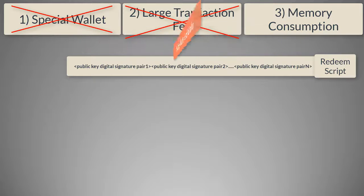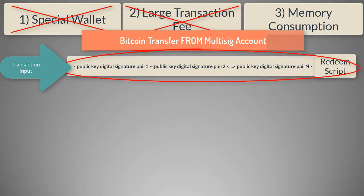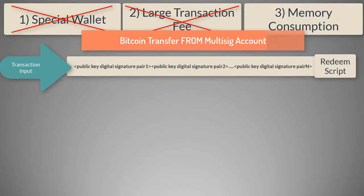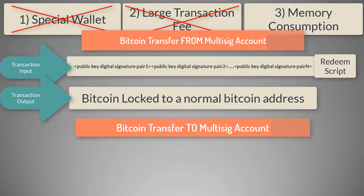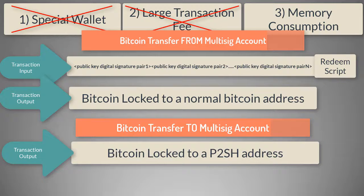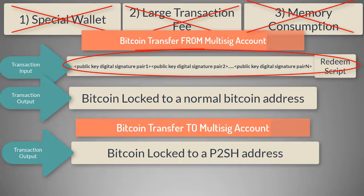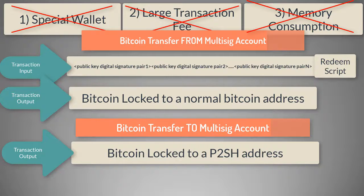In the second step, the unlocking script is executed on its own. The transaction input contains digital signatures with the redeem script, meaning you need a special wallet to spend Bitcoin from a multi-sig account. The transaction output will be a normal output locking the Bitcoin value to whatever Bitcoin address you are transferring to. When the sender was sending Bitcoin to the multi-sig account, the transaction output was also a normal locking output with the hash of the script — the P2SH address — similar in size to a normal Bitcoin address. So in all cases, transaction output is always short and does not require extra memory, solving the third and last problem of memory consumption. When the owner spends from the multi-sig account, the transaction input is large, but transaction inputs are stored in the blockchain system and not in RAM, so even a large transaction input does not contribute to memory consumption.